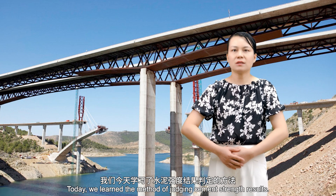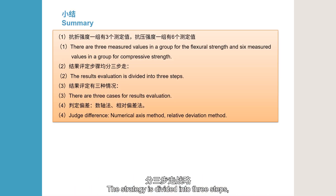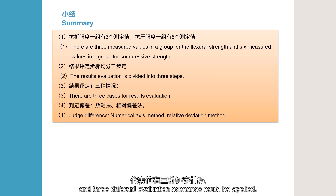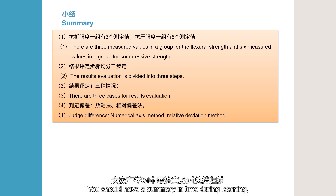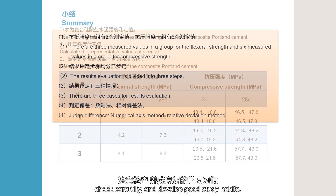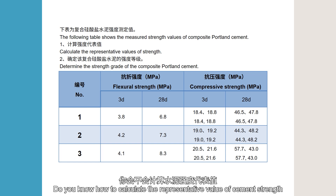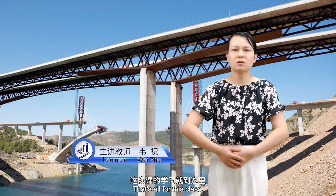Summary: today we learned the method of judging cement strength results. The strategy is divided into three steps, and three different evaluation scenarios can be applied. The number line method and relative deviation method can both be used to determine the deviation. Be careful and patient in the calculation process, check carefully, and develop good study habits. Now think about this: can you calculate the representative value of cement strength and determine its strength grade? That's all for this class. Thank you.